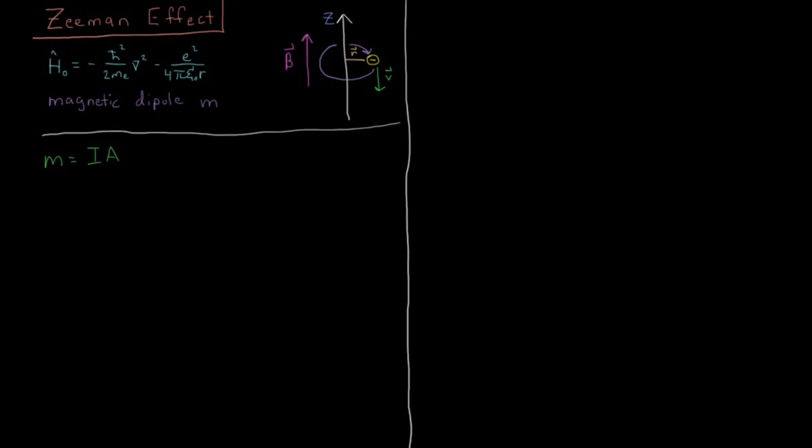For each of these individual components, the current is just going to be the charge flowing over time. So that's going to be the charge of whatever charged particle Q times the velocity over 2πr, the total perimeter that's going to be traveling there. And for the area, the area is just going to be the area of this circle or whatever shape it encloses, but if it is a circle, then that's going to be πr².